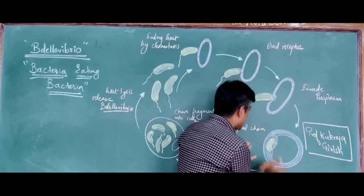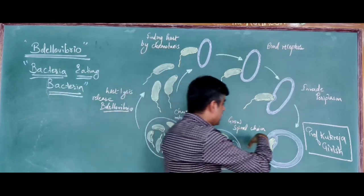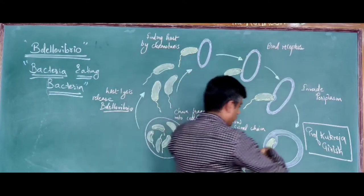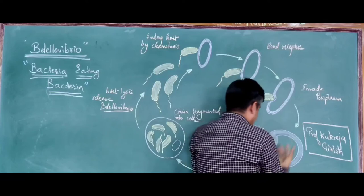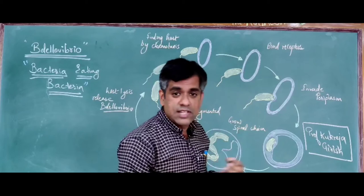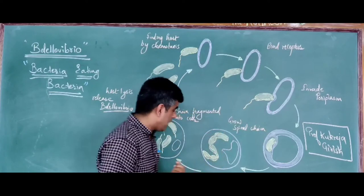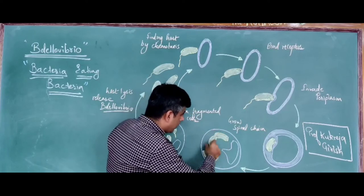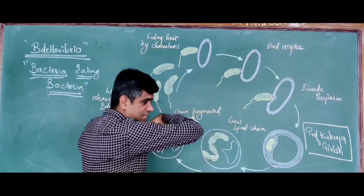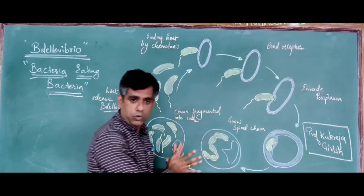As soon as it gains entry inside and is covered from outside by the host cell, Bdellovibrio loses its flagella. The host cell now becomes a kind of incubator, turning circular. Bdellovibrio feeds on biopolymers like proteins and nucleic acids of the host cell, consuming the host's nutrients. It then forms a spiral chain-like structure, multiplying as one cell attached to another while continuing to consume the host's nutrients.